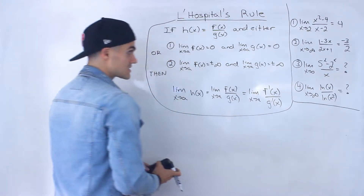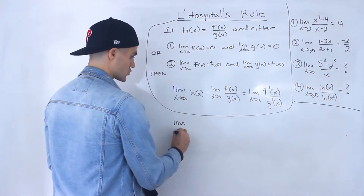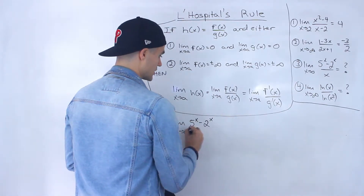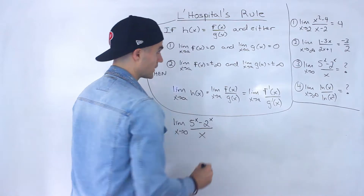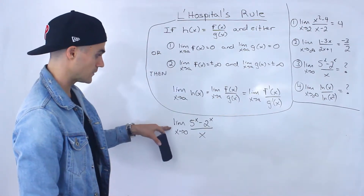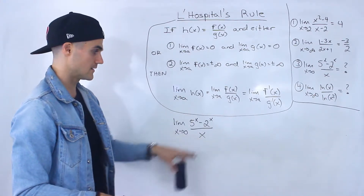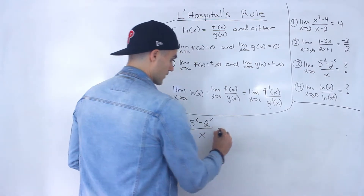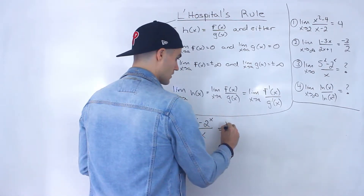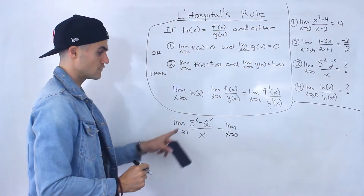Now let's move on to more complex limits — ones that we didn't have previous tools for. Fortunately, now that we have this new tool, we can actually apply L'Hôpital's Rule to both of these. We have the limit as x approaches 0 of (5^x - 2^x) over x. Notice it's in that 0 over 0 format, so we can take the derivative of the numerator.